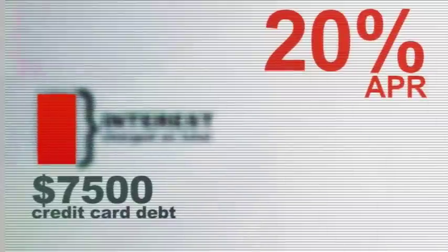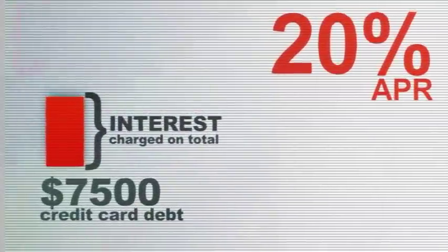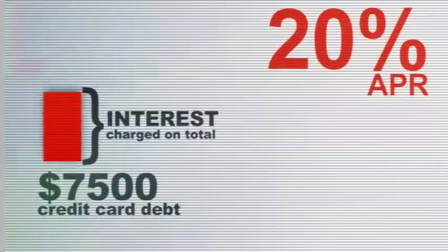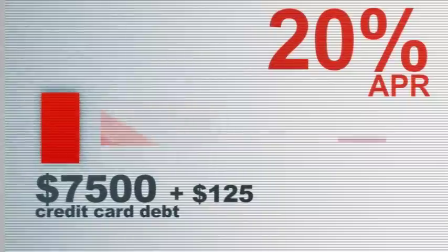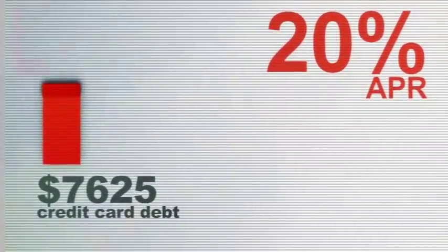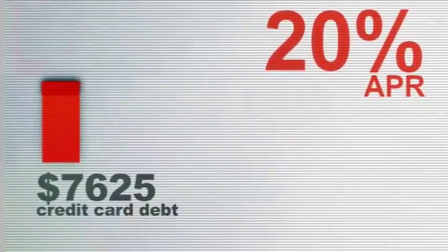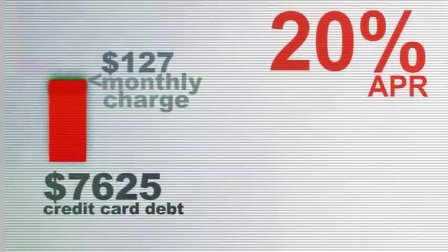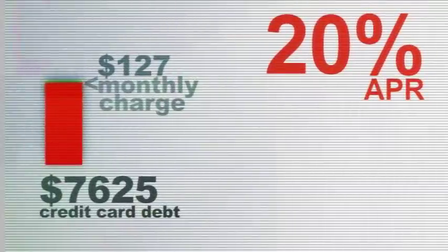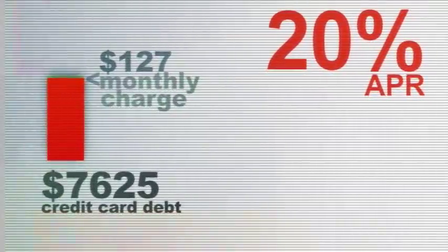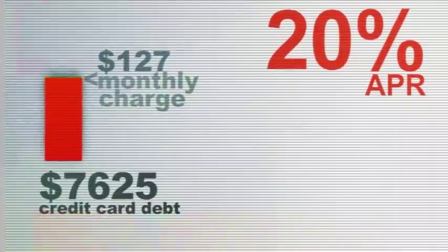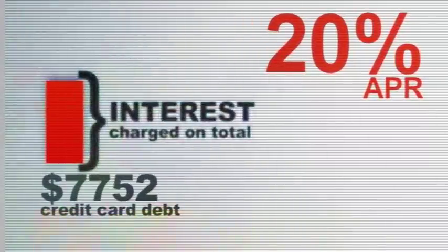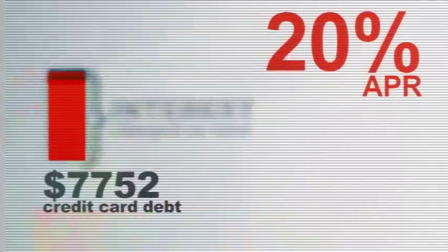Let's say you don't pay the $125 finance charge — it would be added into your balance. So $7,500 plus $125 equals your new balance of $7,625, and you would now be charged interest on this amount. At 20%, that would be $127.08 per month. Your interest and fees become part of your balance, and you're charged interest on that larger balance. It's how $5,000 can turn into $25,000.